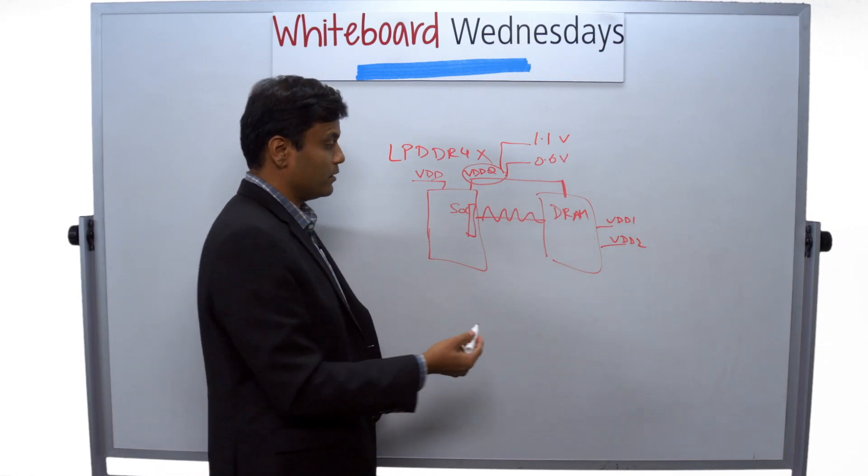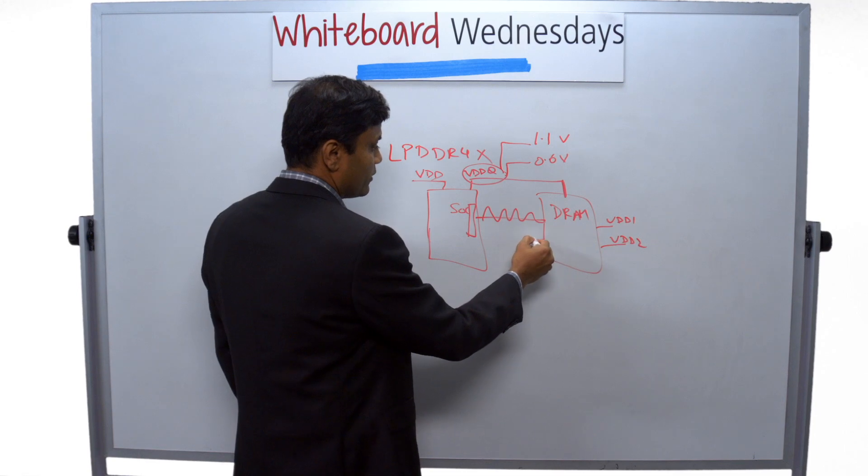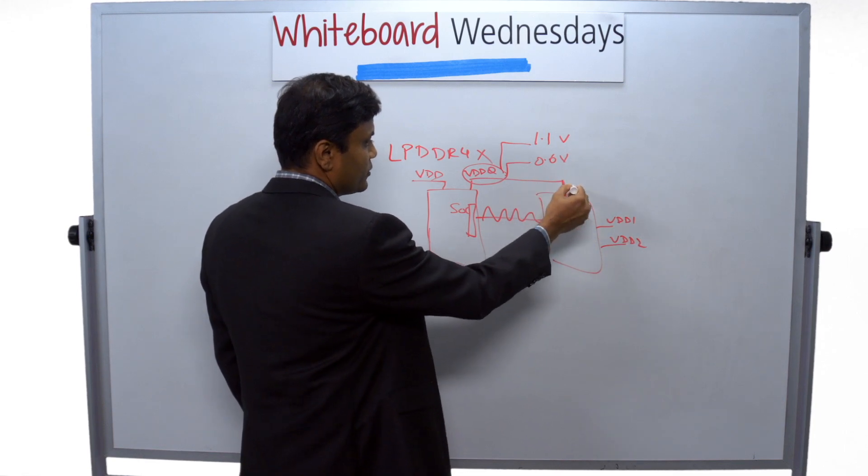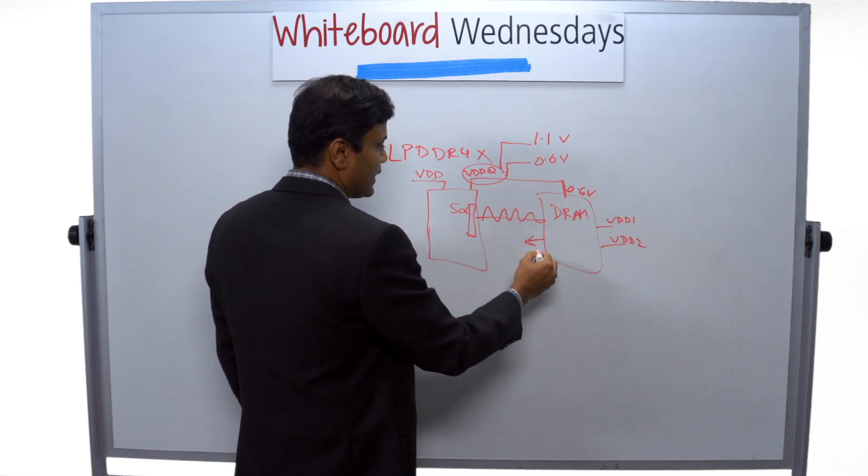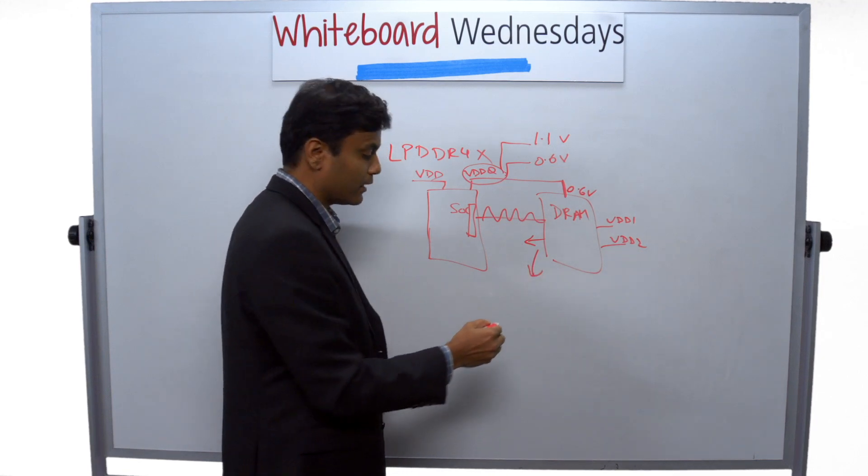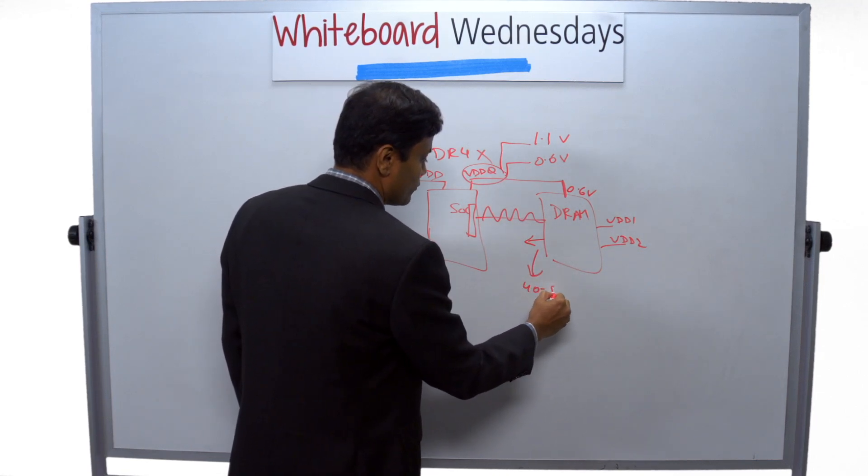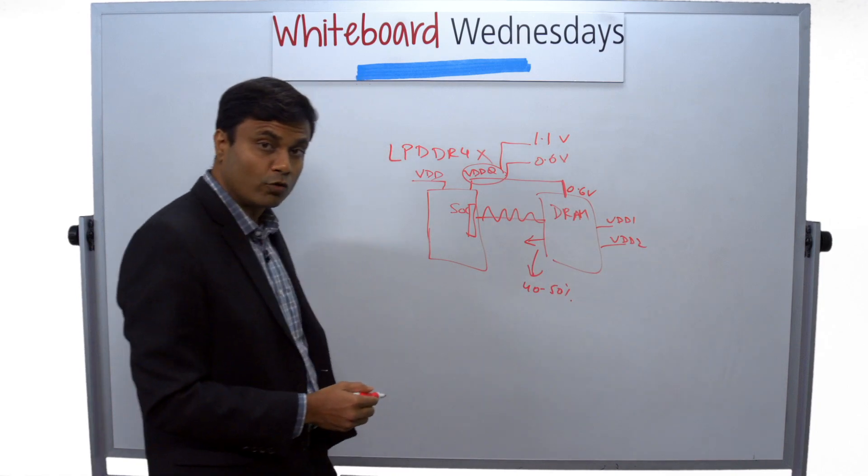Specifically, during a read situation, the driver of the DRAM is now running at 0.6 volts, and the output driver power can go down by as much as 40 to 50 percent compared to LPDDR4.